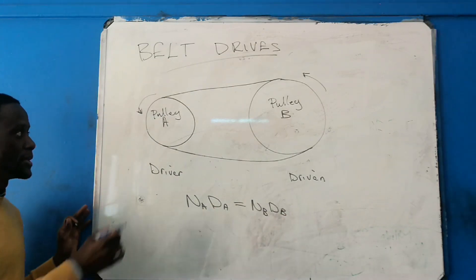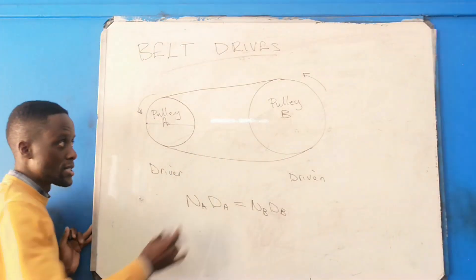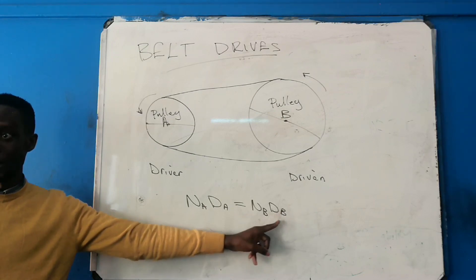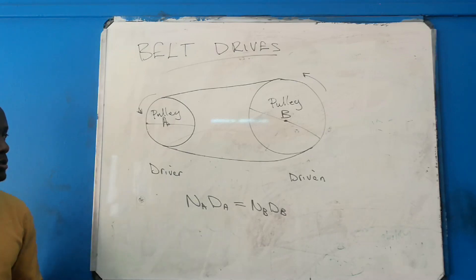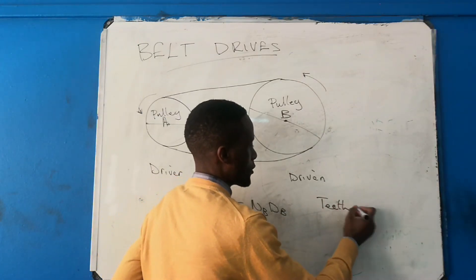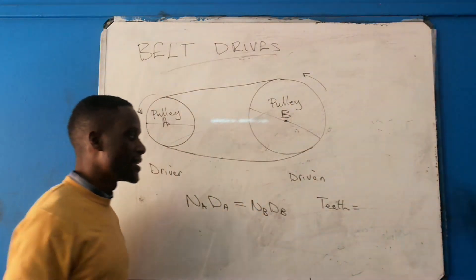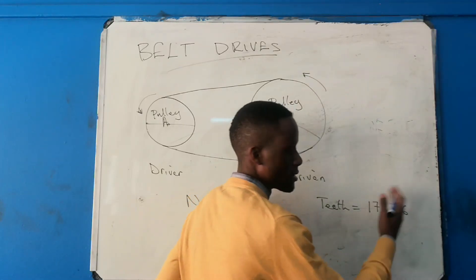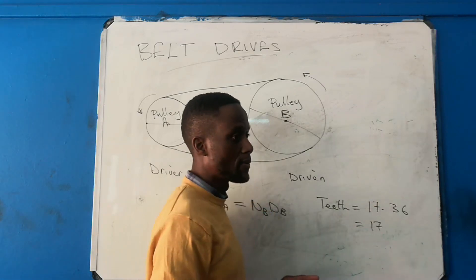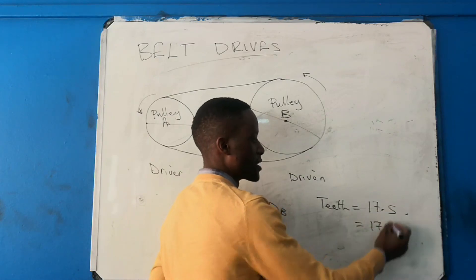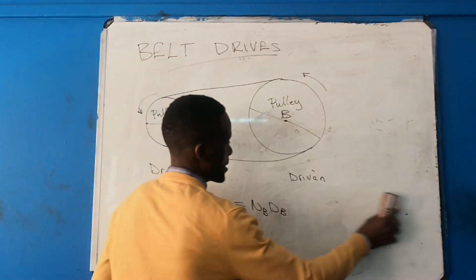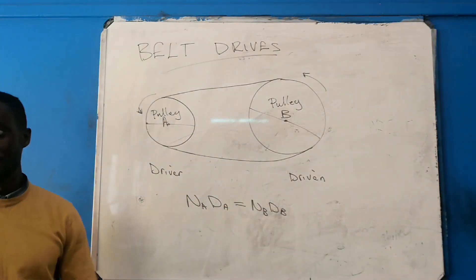In terms of size, the diameter is the distance from one end to the center to the other end. For gear drives, you count the number of teeth on each gear. And one important rule: if after calculation you get a decimal for number of teeth — say 17.36 — always round to a whole number. So you write 17 teeth. If it's 17.5 or more, round up to 18. For diameters and rotational frequency, you can leave them in decimals.